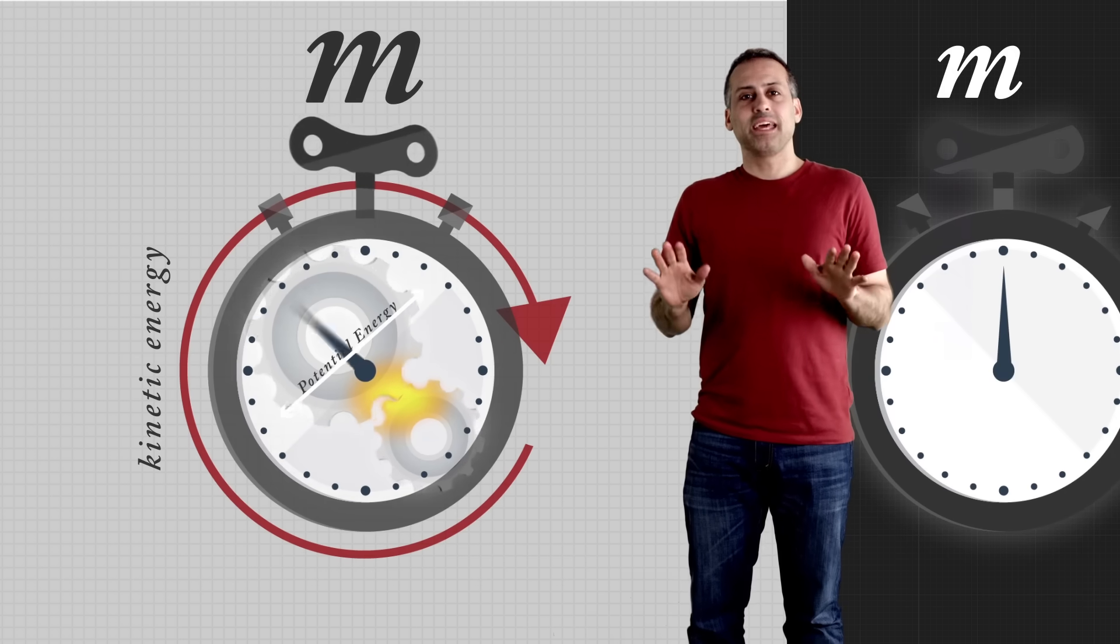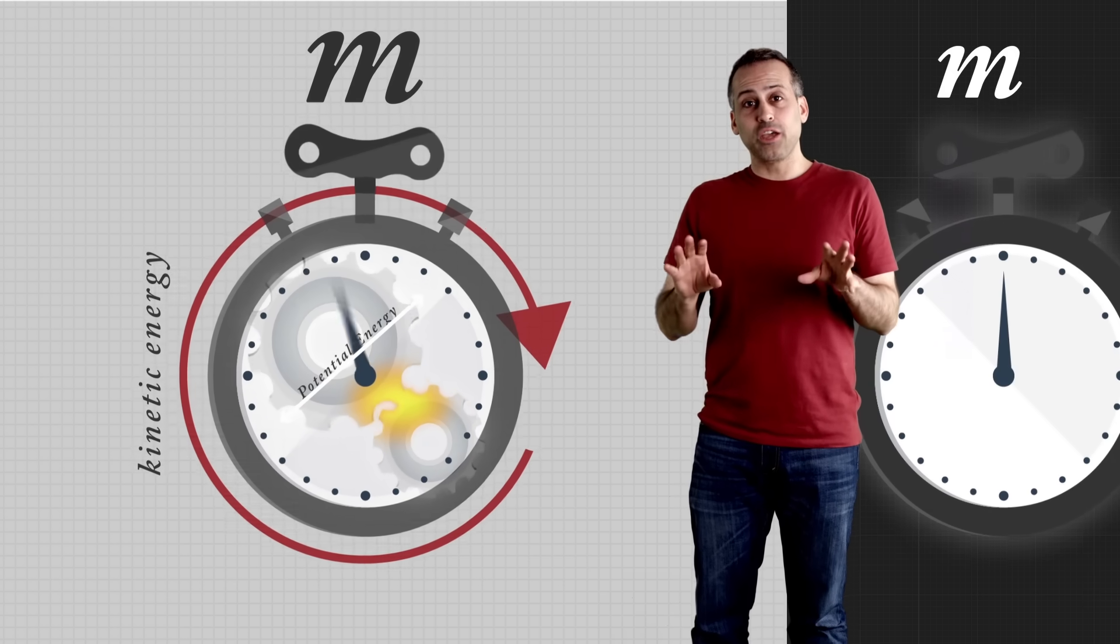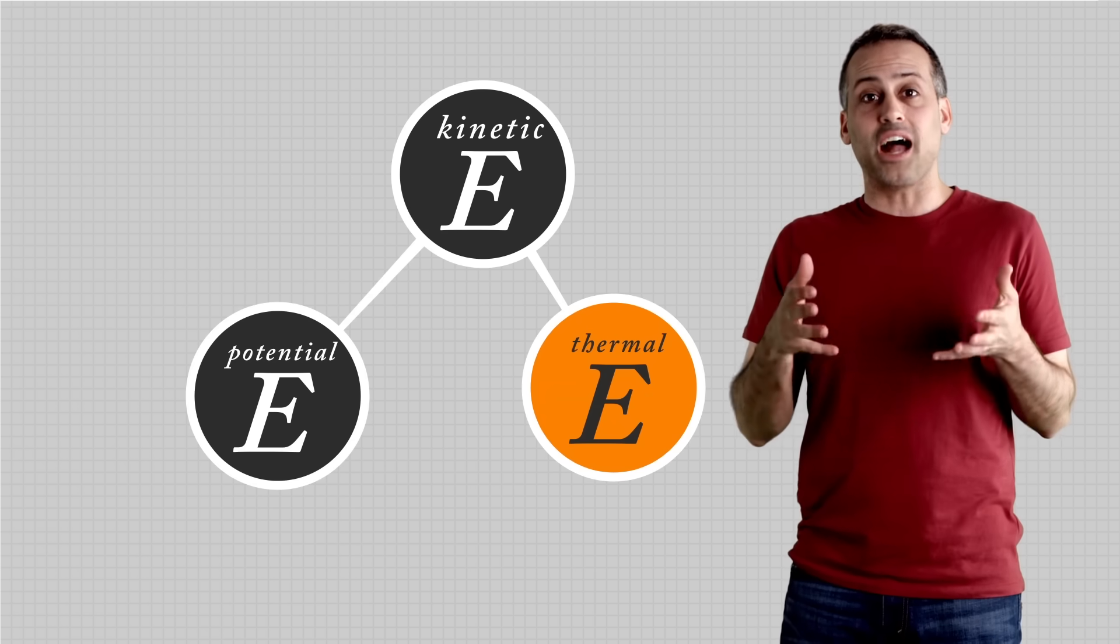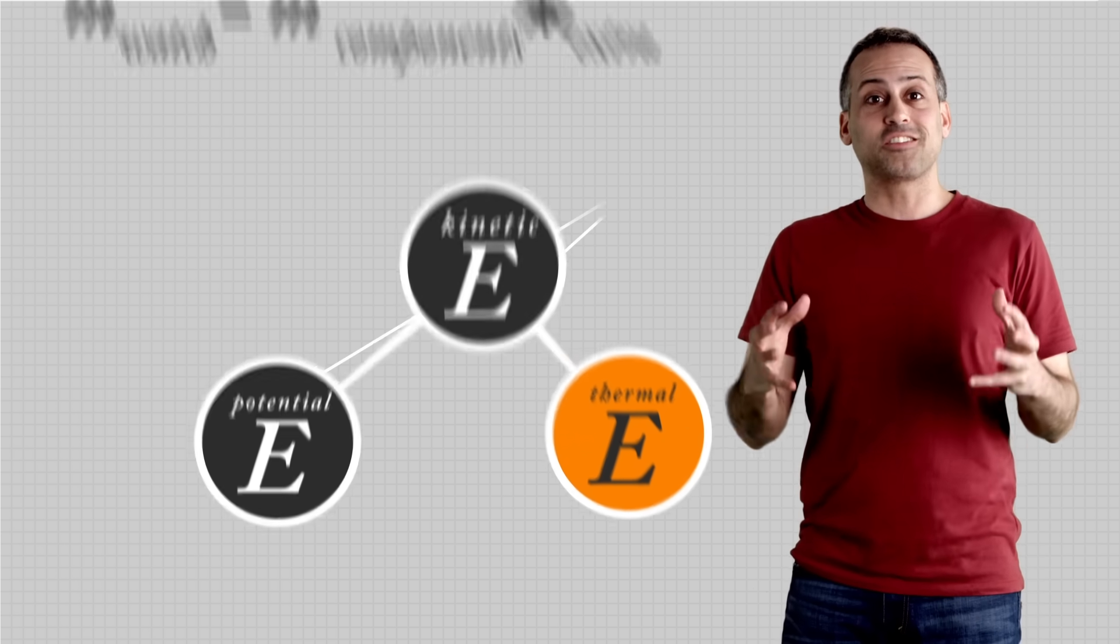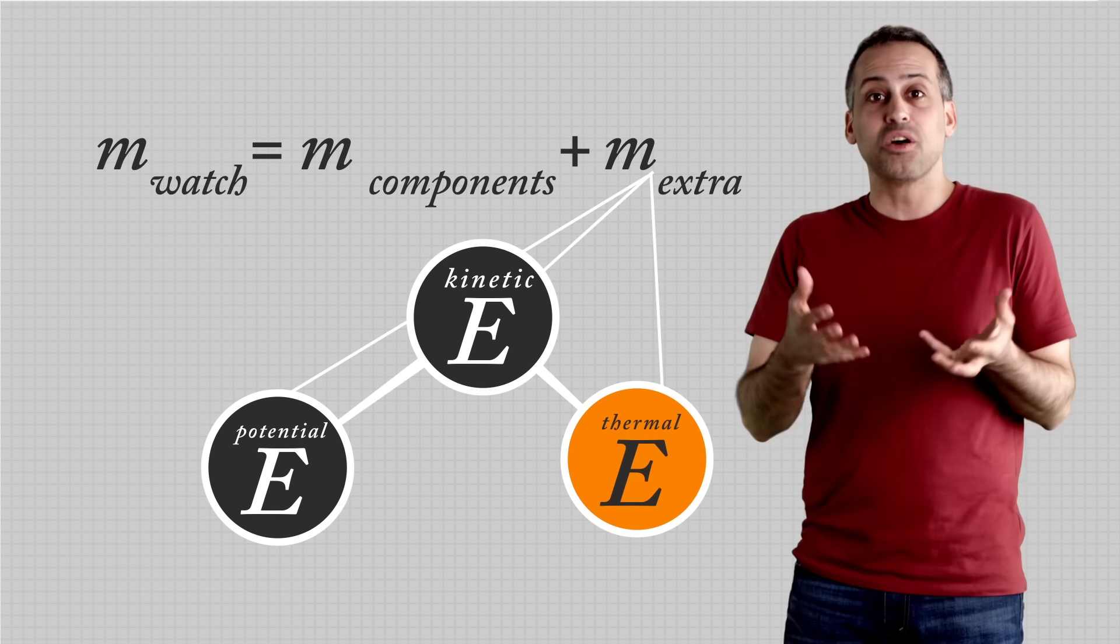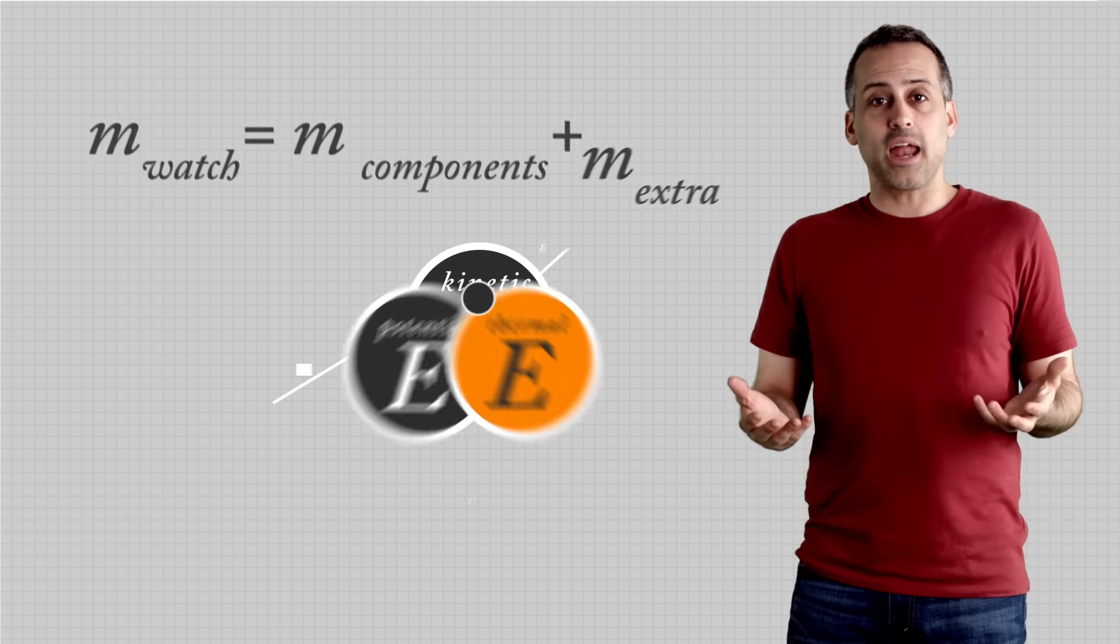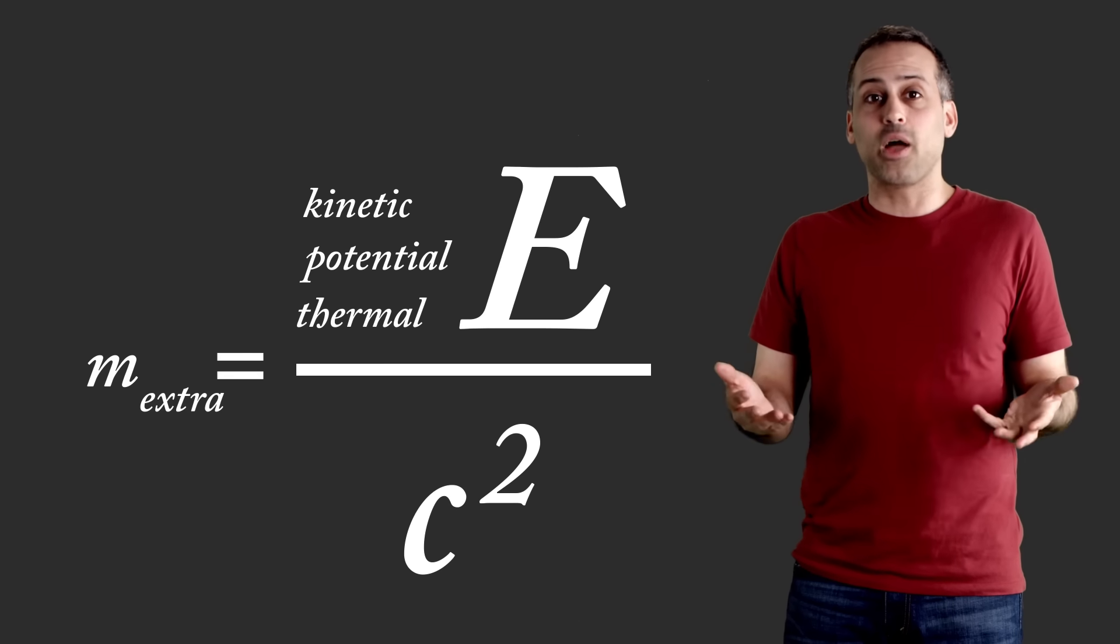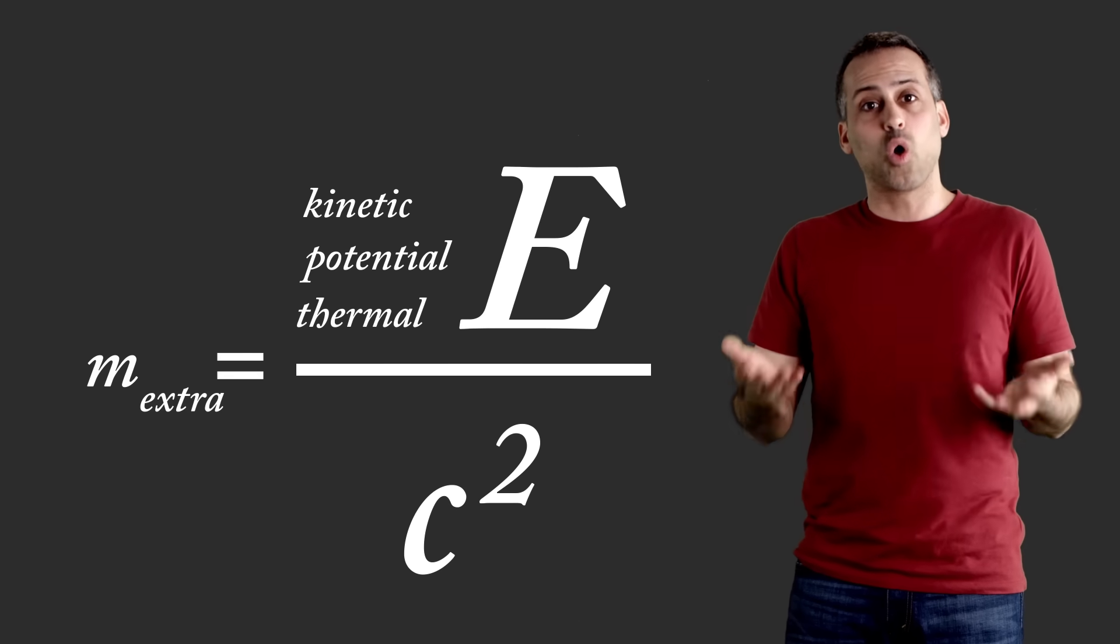OK, got it? Now, what m equals E over c squared says is that all that kinetic energy and potential energy and thermal energy that resides in the watch's parts manifests itself as part of the watch's mass. You just add up all that energy, divide it by the speed of light squared, and that's how much extra mass the kinetic and potential and thermal energies of the parts contribute to the whole.